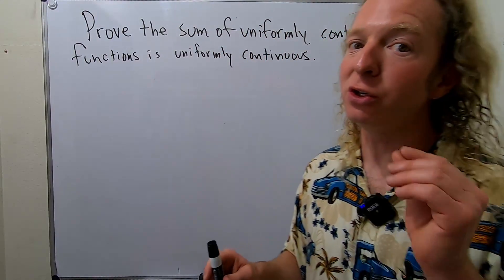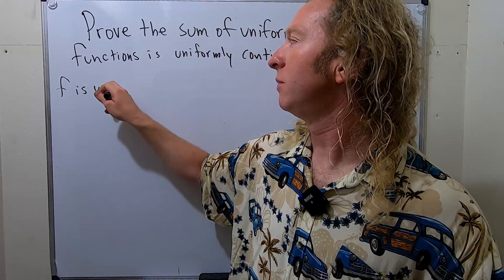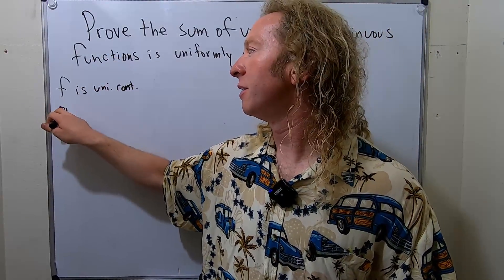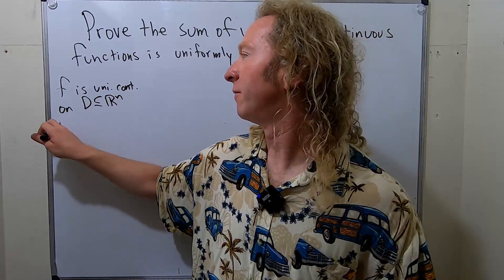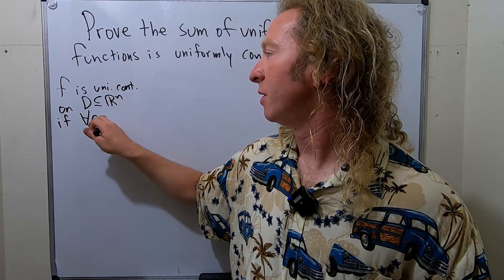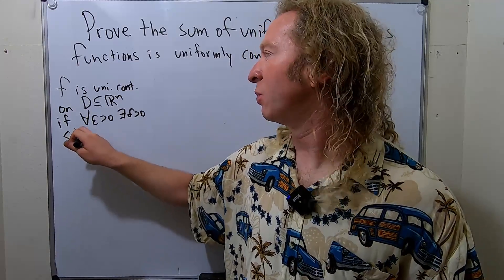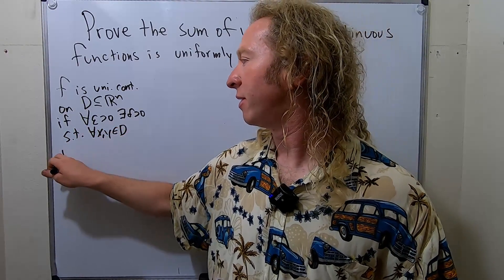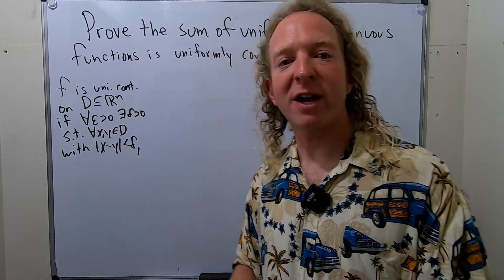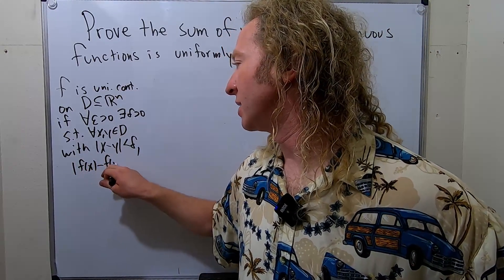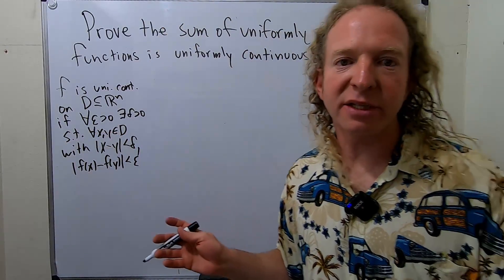Let me recall what it means for a function to be uniformly continuous. We say a function F is uniformly continuous on a set D, which is a subset of Rn, if for every epsilon greater than zero, there exists a delta greater than zero, such that for every x and y in D with the distance between x and y being smaller than delta, we have the distance between f(x) and f(y) being less than epsilon. The absolute value symbol here — we can assume it's the Euclidean distance, the Euclidean norm.